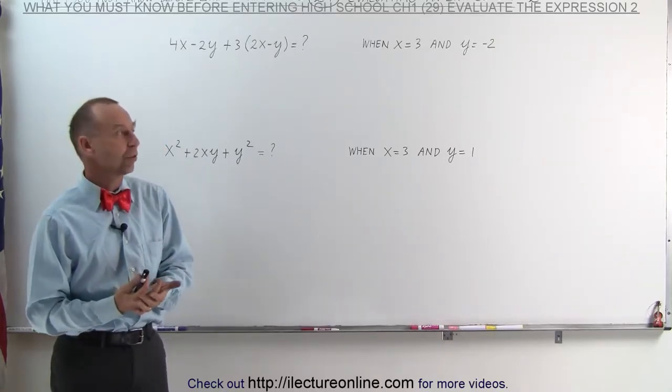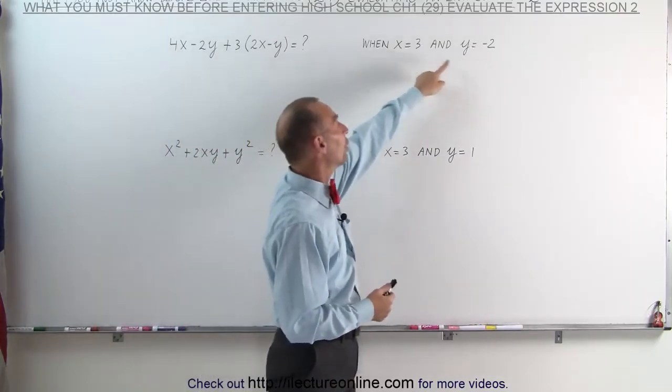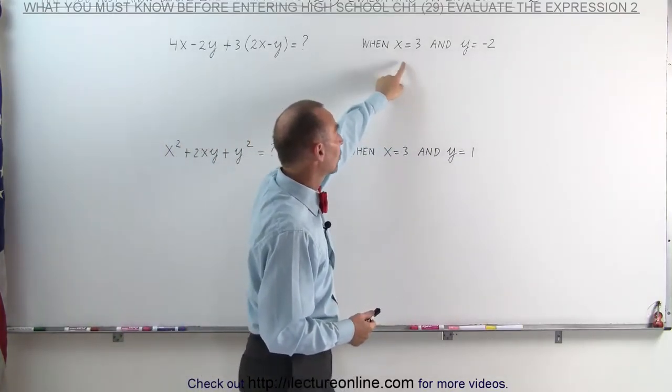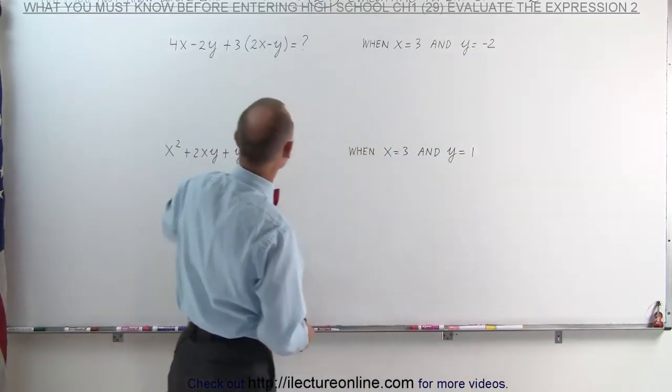We always must be given the value for the unknowns. In this case they say x is equal to 3 and y is equal to negative 2 in our first example.